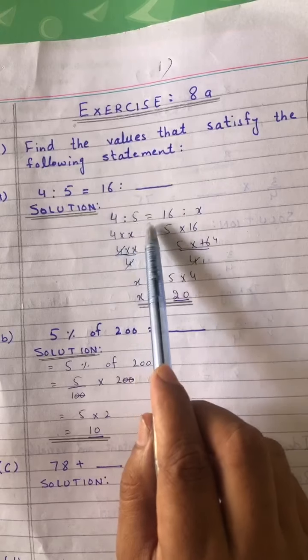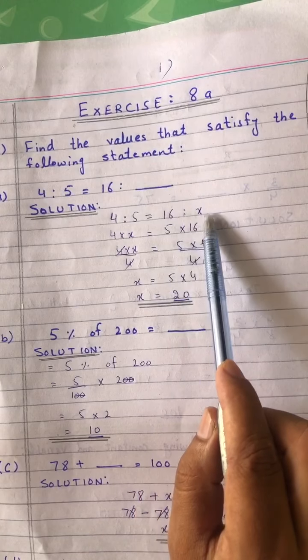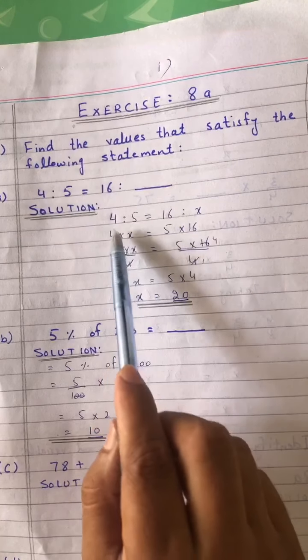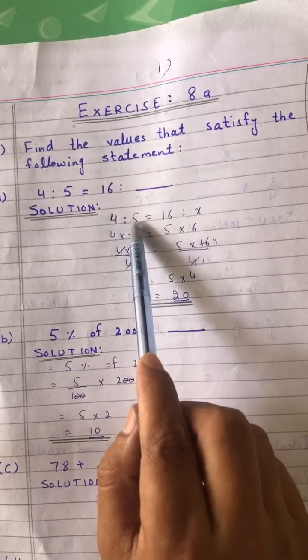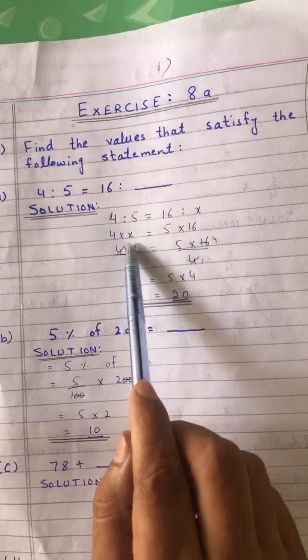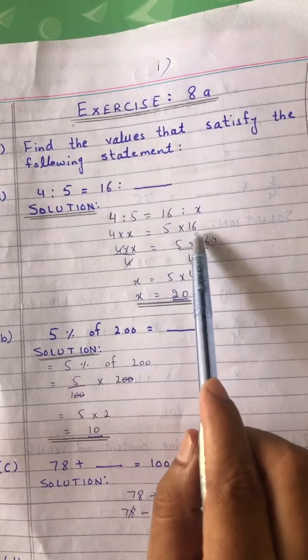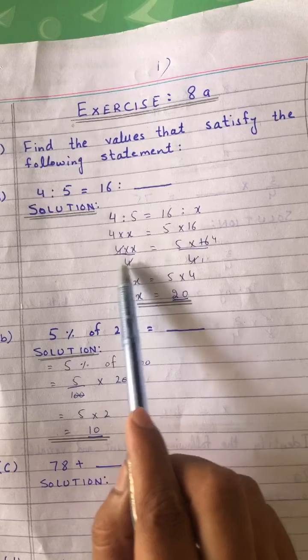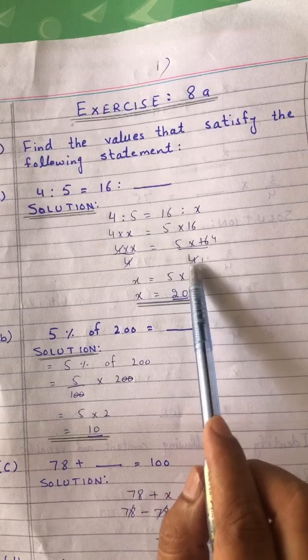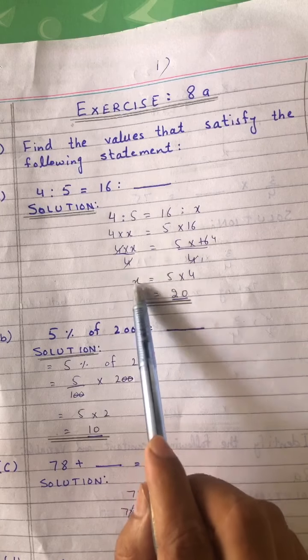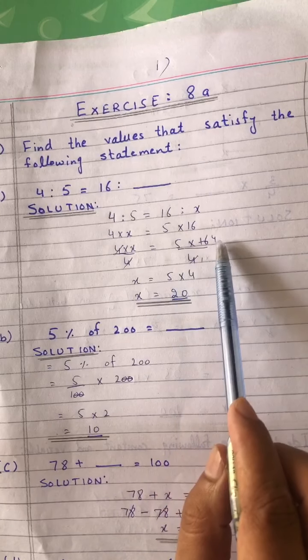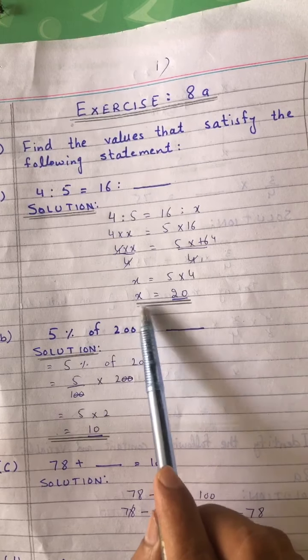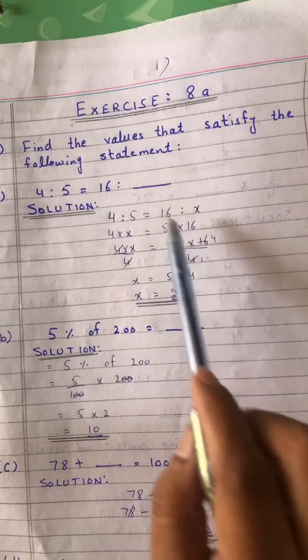4:5 = 16:X gives us 4X = 5 × 16. X = 5 × 4 = 20.